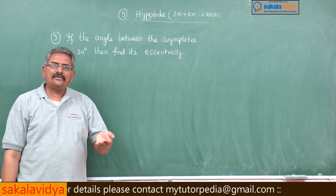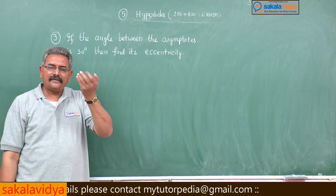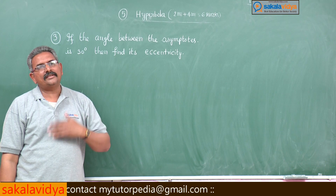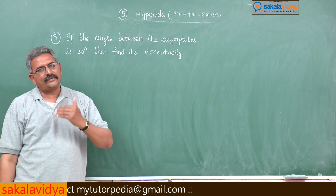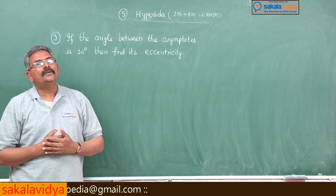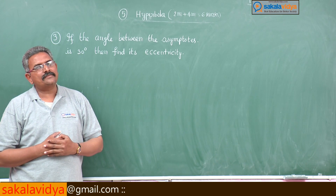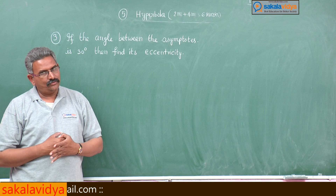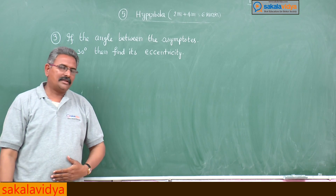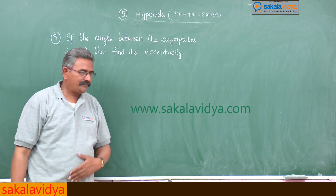That means E equals sec(15°). sec(15°) is equal to 1/cos(15°), and after simplification you get √6 − √2. That will be the answer. Shall we do it?